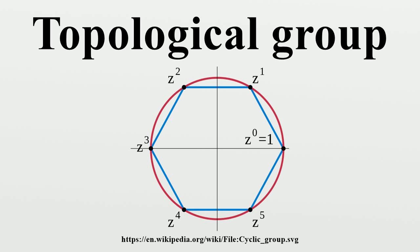In topology, the homeomorphism group of a topological space is the group consisting of all homeomorphisms from the space to itself with function composition as the group operation.